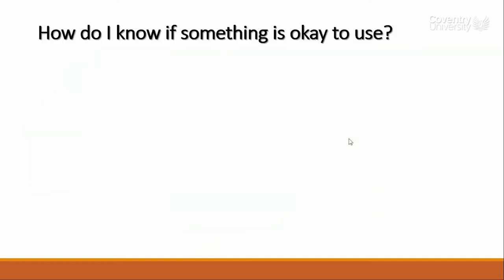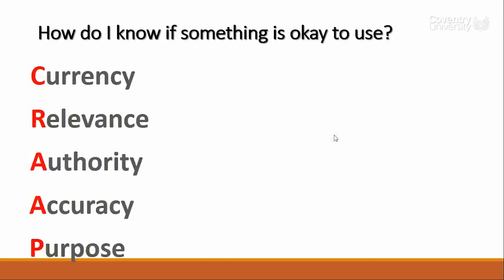So how do we actually go about doing this? How do I know if something is okay to use for one of my academic assignments? There's a particular test that you can apply called the CRAAP test, and it's designed to help you evaluate the quality of any particular source — whether that's a journal article, a website, or a book. There are five sections to the CRAAP test.